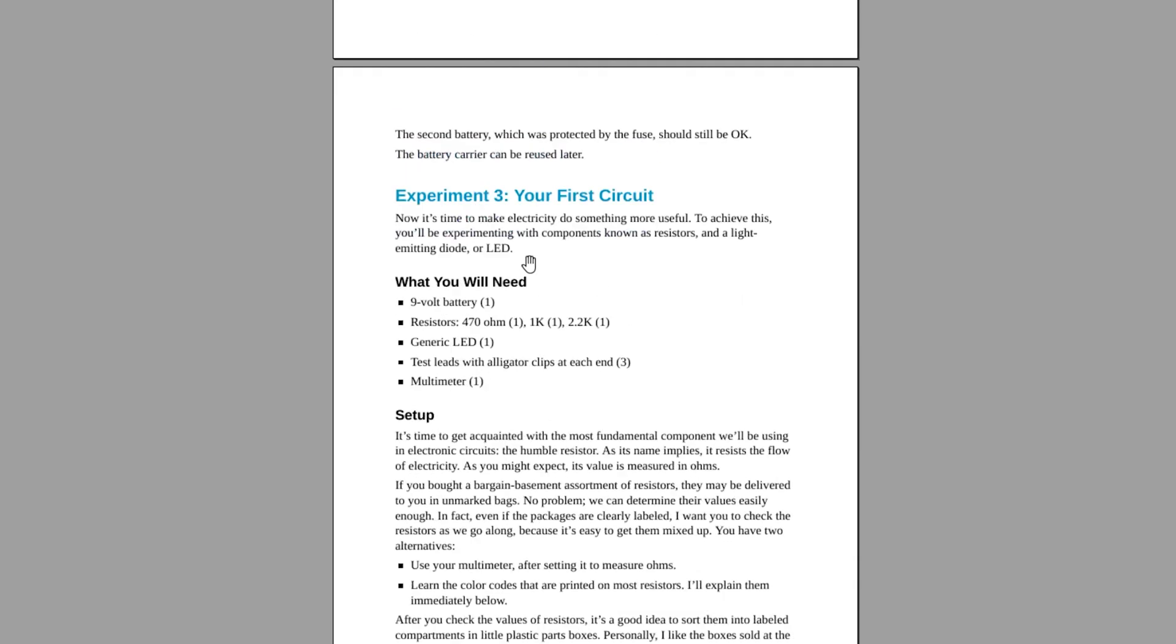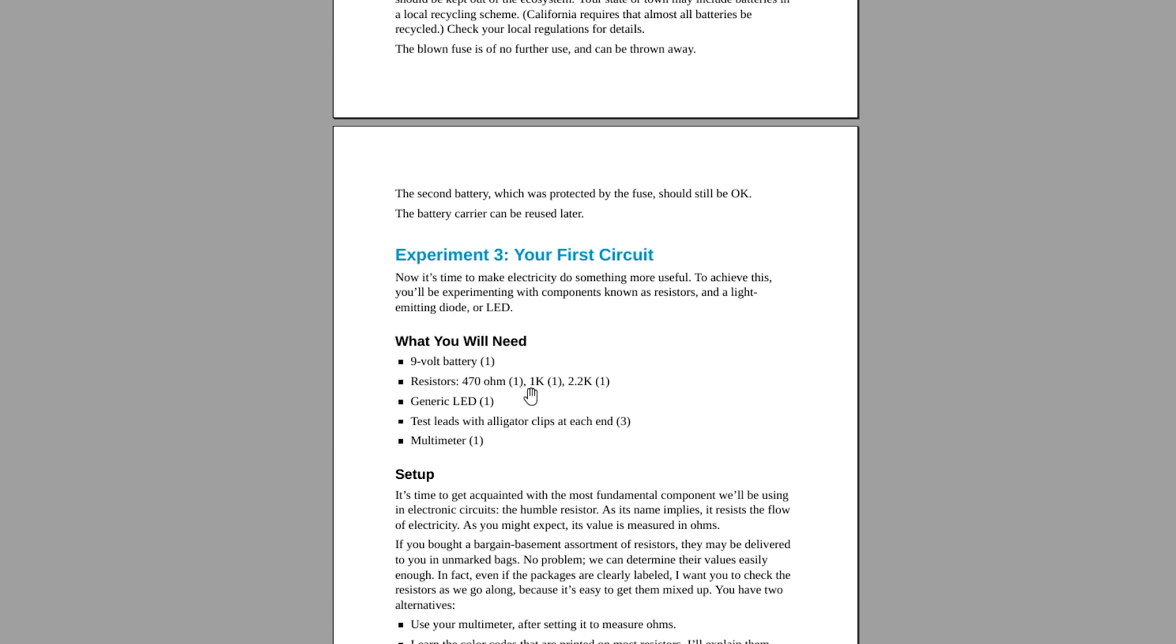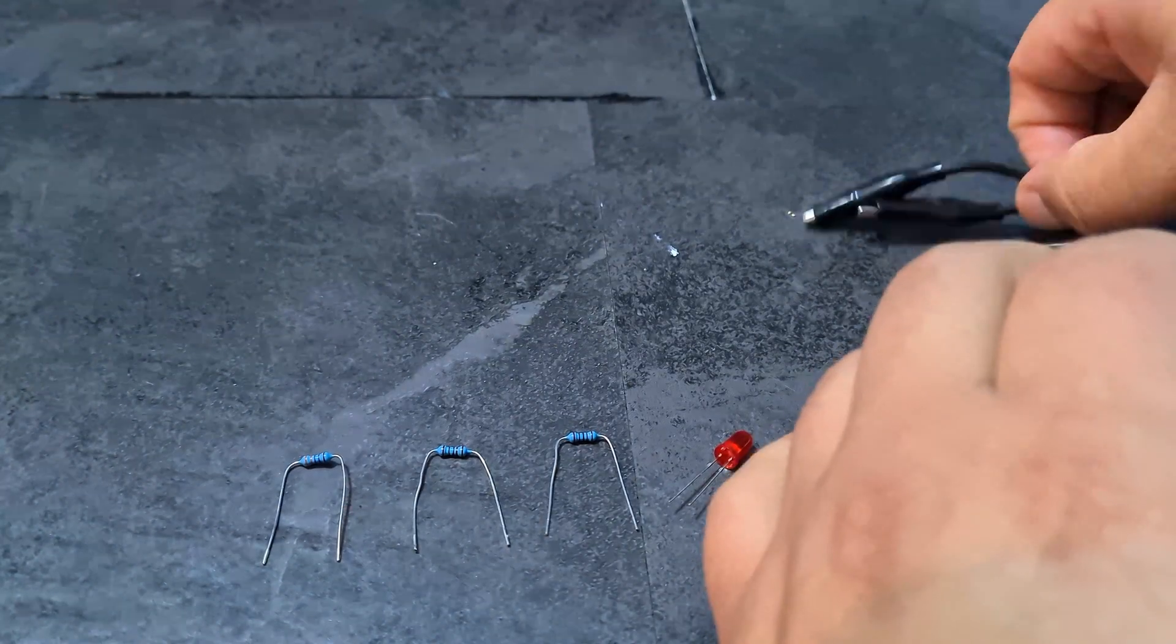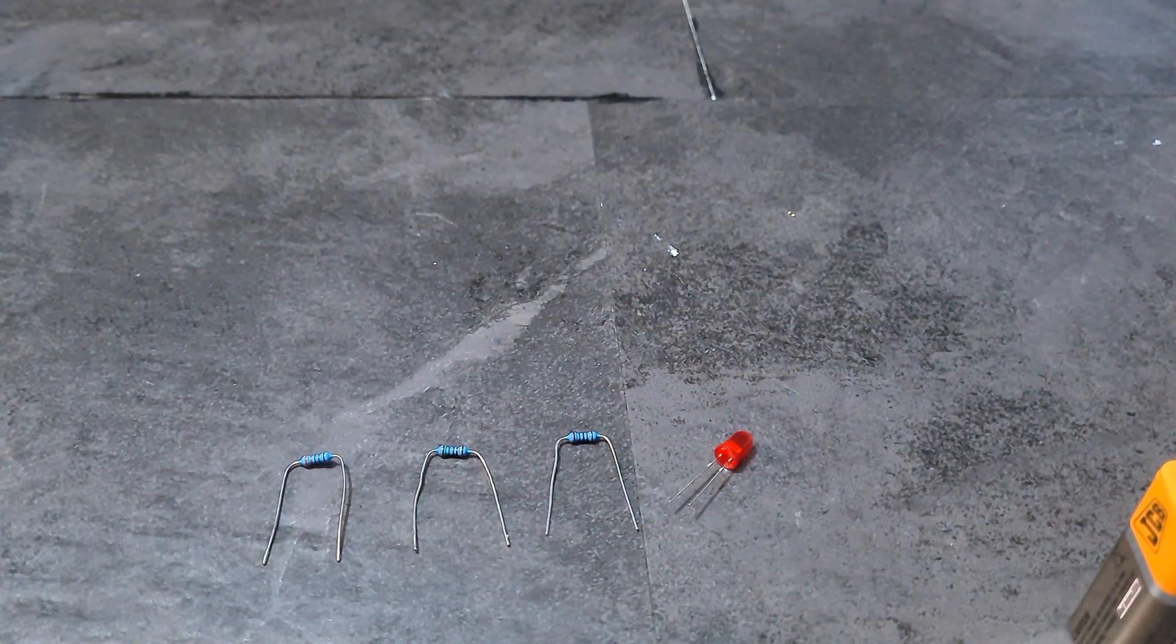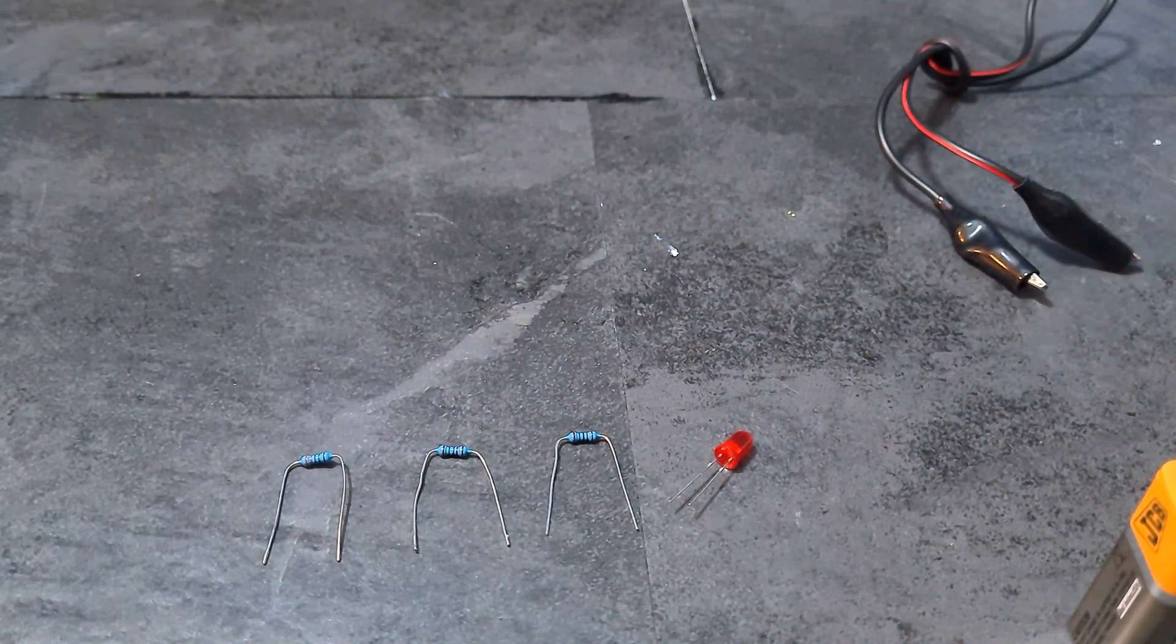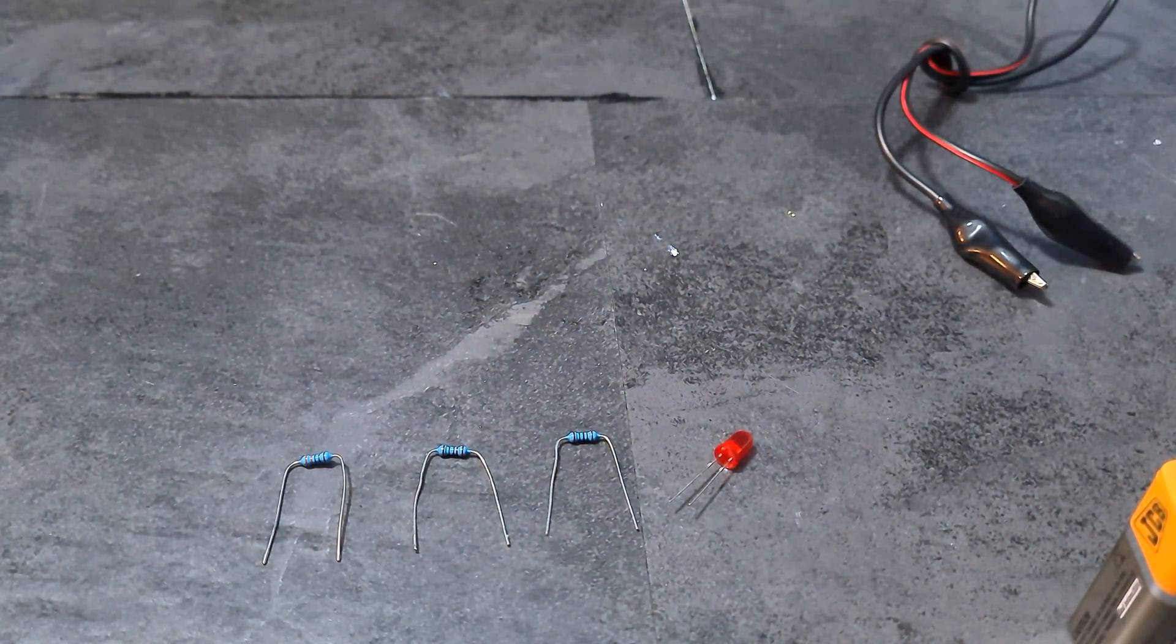But let's go with the first circuit here, which is basically using a nine volt battery in order to power an LED. And we're going to use three different values of resistors. He's got here 470 ohms, one kilo ohms and 2.2 kilo ohms. I don't have those values. So instead, I've got a one kilo ohm resistor, a two kilo ohm resistor, and I've got a 330 ohm resistor as well. So I'll be using those.